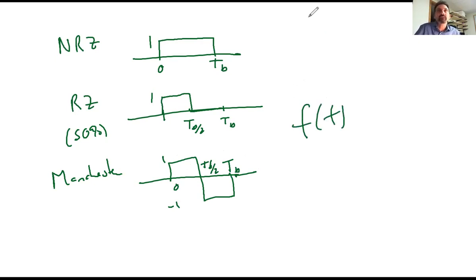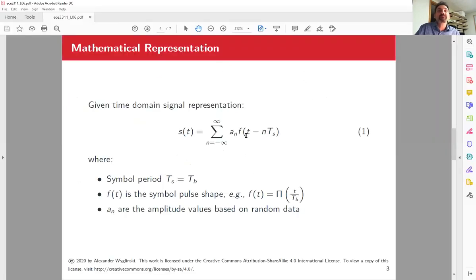And then if we go back to the slides, we would have shifted versions. TS and TB, exactly the same, they're equivalent. And we would have shifted versions of these, and they would be shifted by integer multiples of the bit period, and it would be multiplied by the amplitude value that is representative of the binary digit being carried during that period. So now that we have that signal model, that's really important.